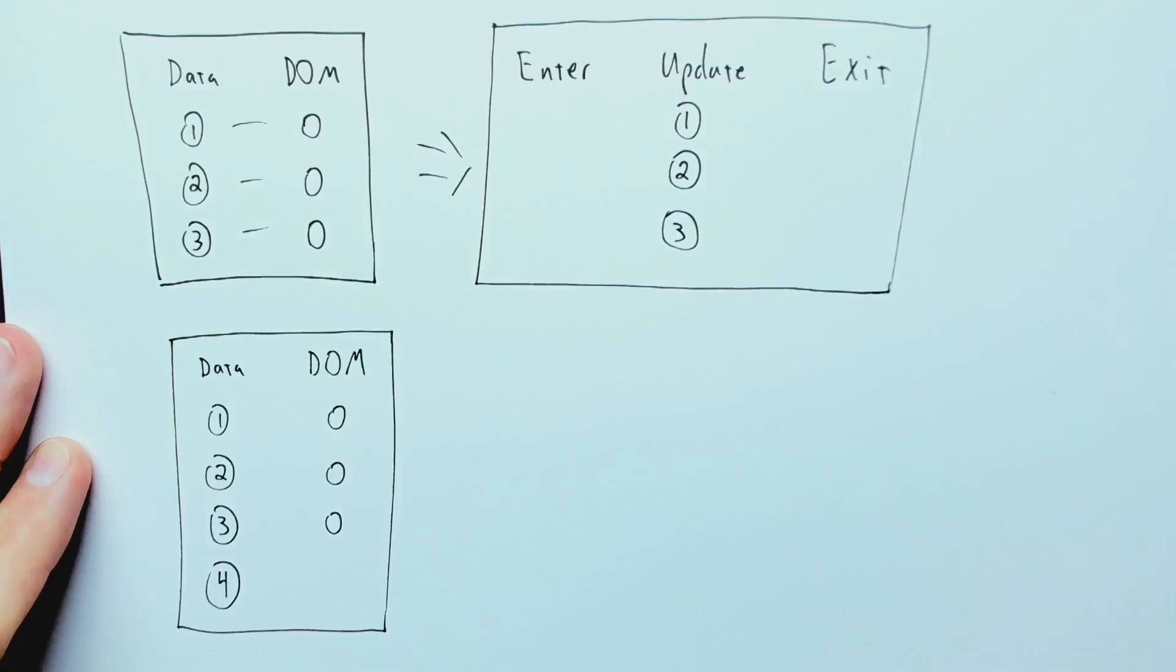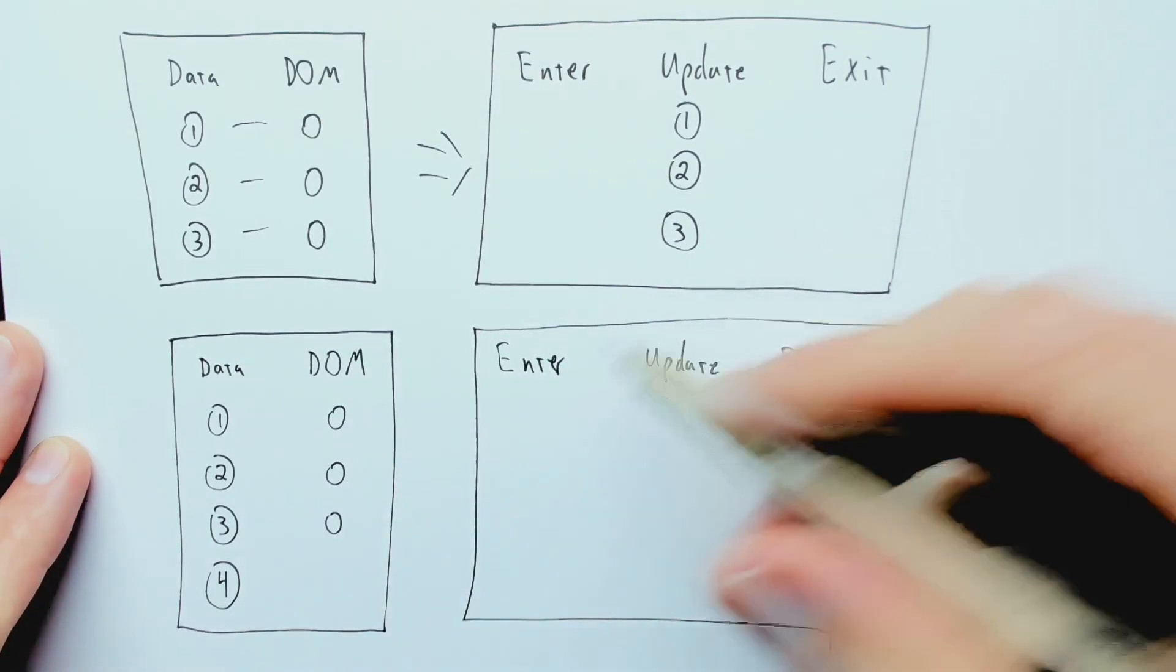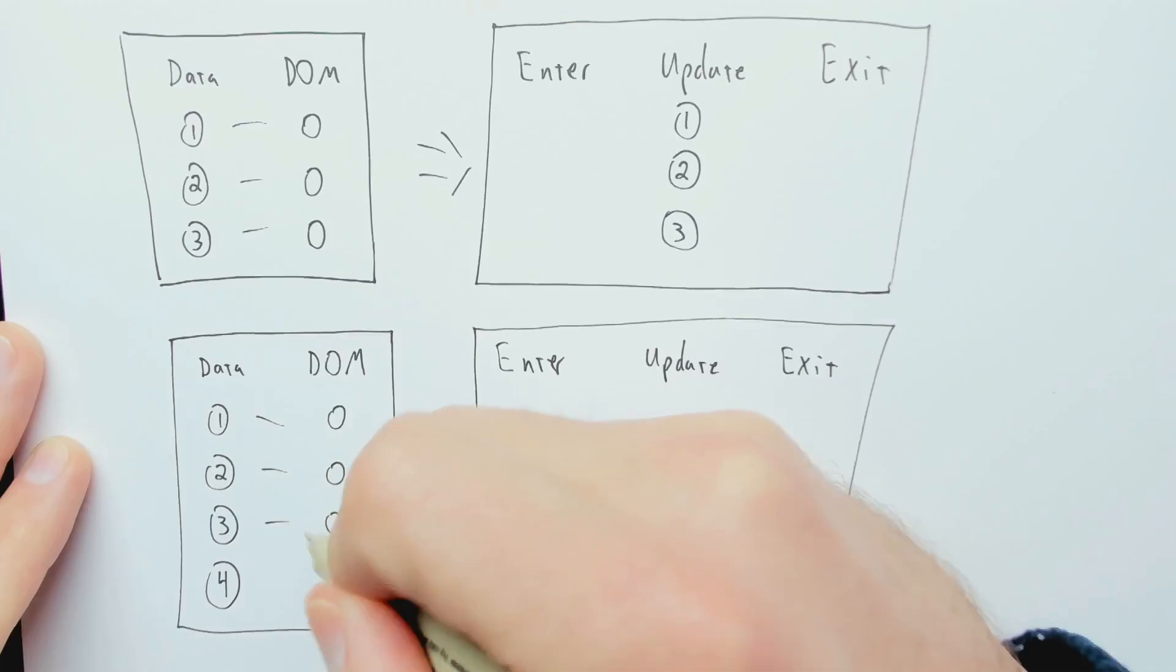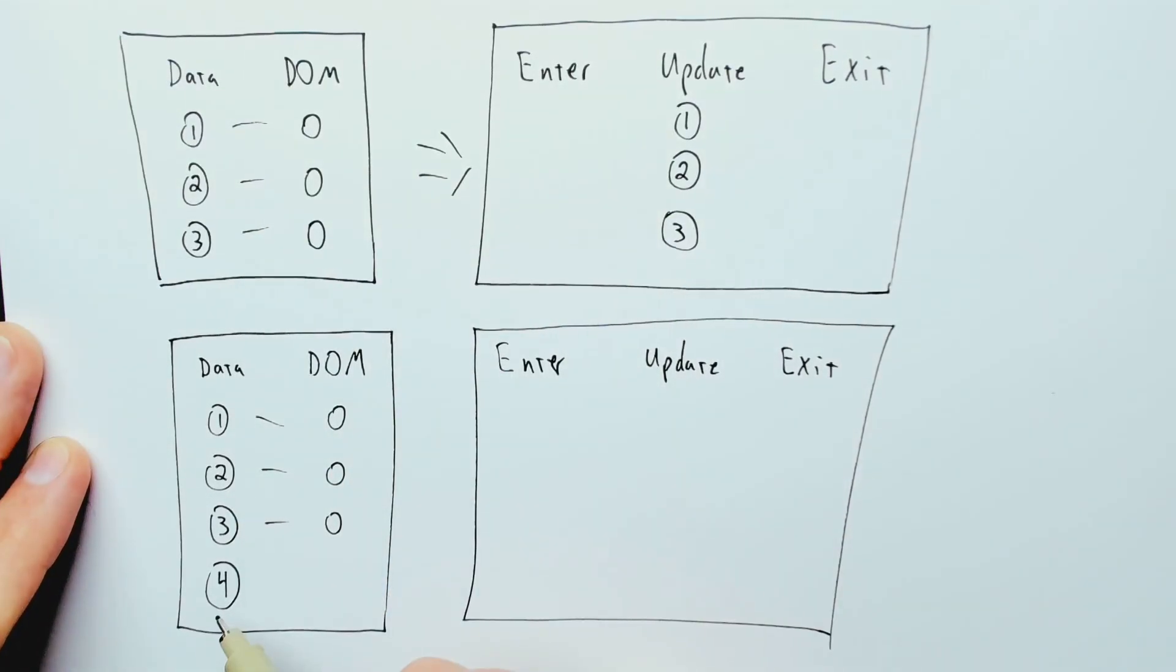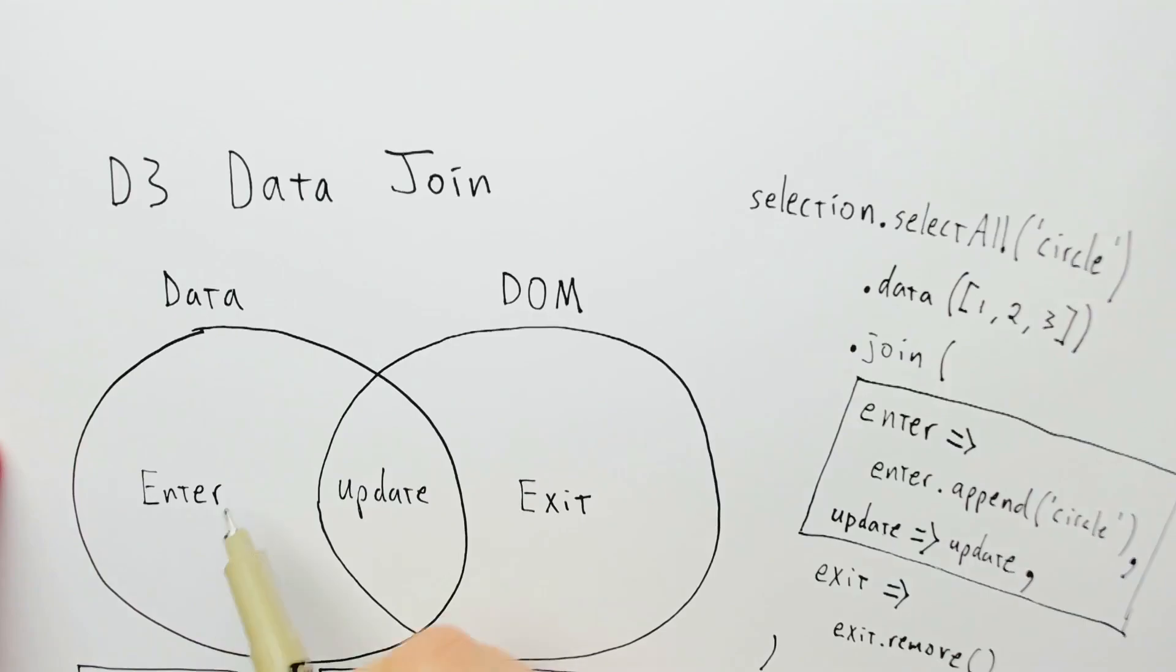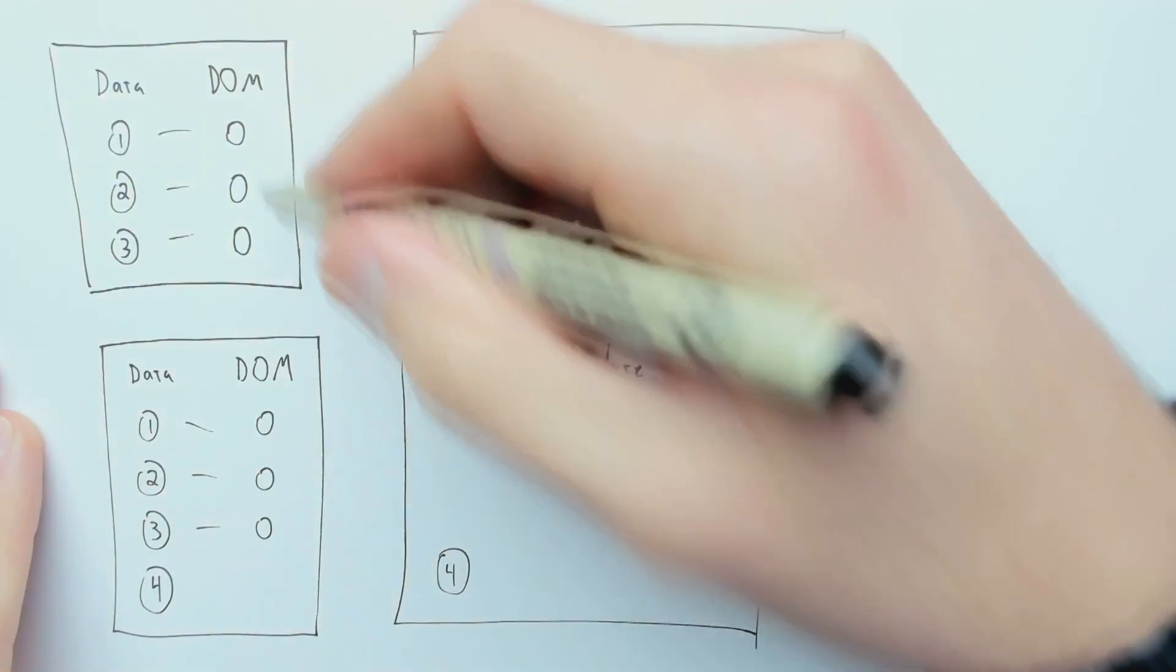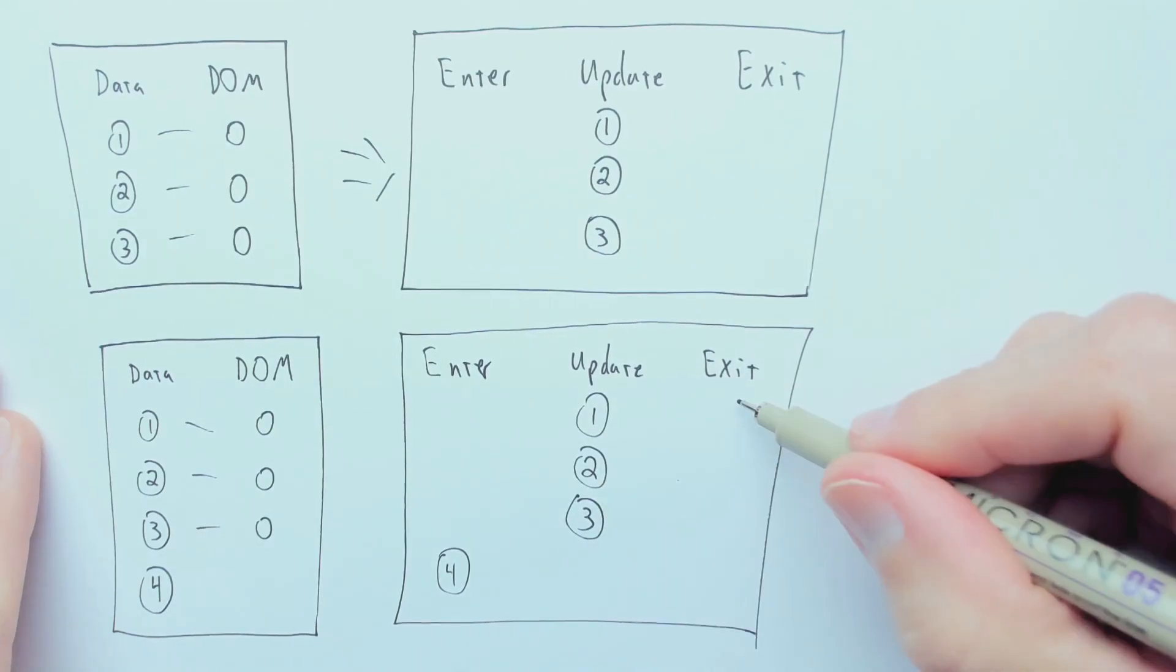Let's consider another case where there are three DOM elements, but there are four data elements. This could happen if the data changes over time. In this case, what will we have for enter? Well, there are DOM elements corresponding to the data elements except for this one. So this element here, four, falls into this set where there is a data element and there is not a DOM element. Therefore, it'll end up in the enter selection. So enter here will be four, and the update will be same as before, one, two, three, and exit will be empty.